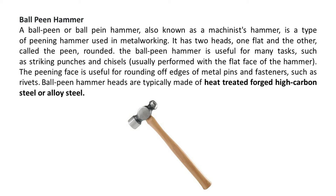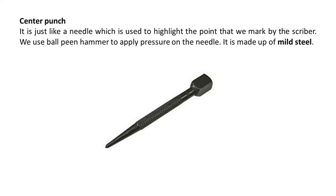Ball peen hammer heads are typically made of heat-treated forged high carbon steel or alloy steel. Center punch is just like a needle, which is used to highlight the point that we mark with the scriber. We use a ball peen hammer to apply pressure on the needle. It is made up of mild steel.